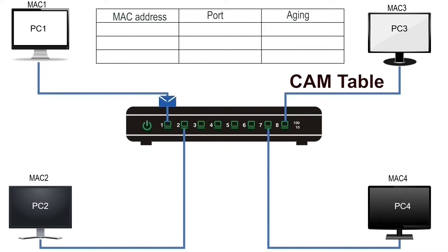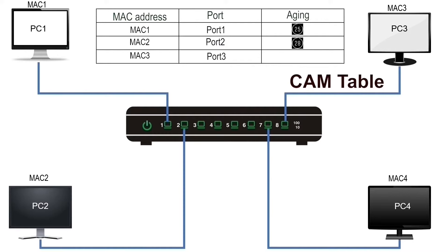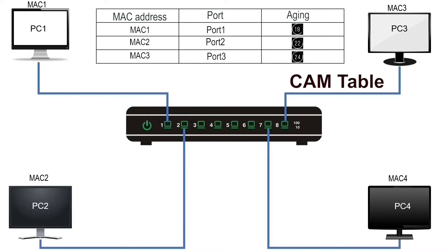In the MAC address field, the switch saves the MAC address from the source field of the frame. In the port field, it saves the port on which the frame was received. In the aging field, it saves a timer — a separate timer is assigned to each entry of the CAM table to age out old entries, allowing room to store new entries.